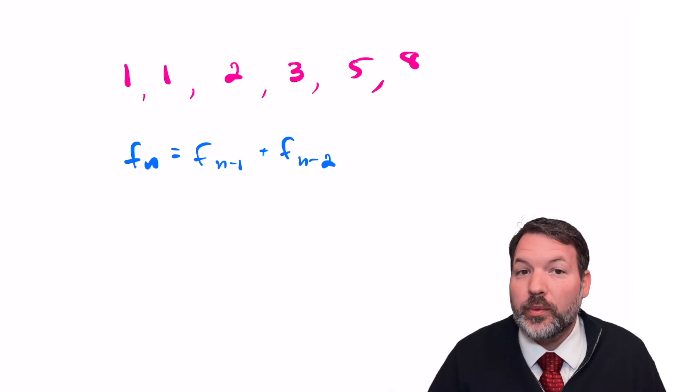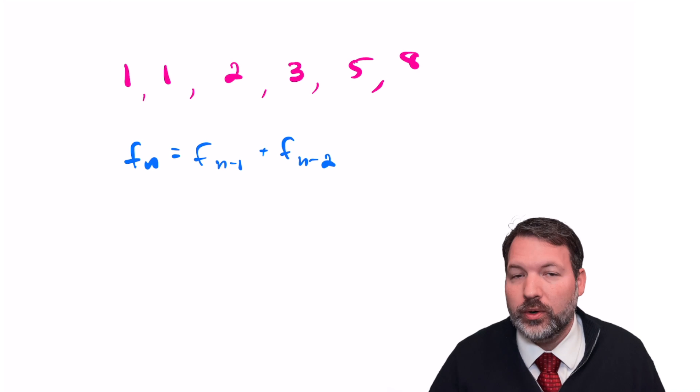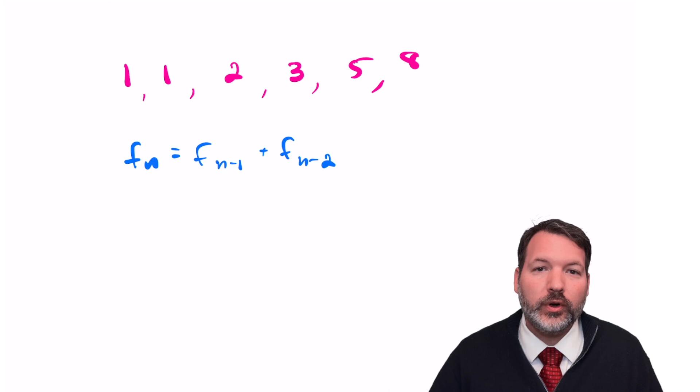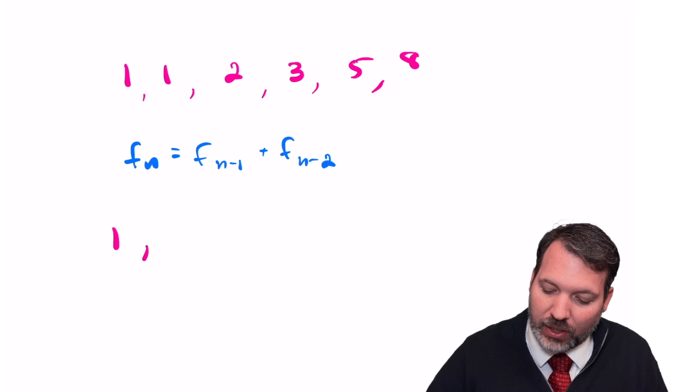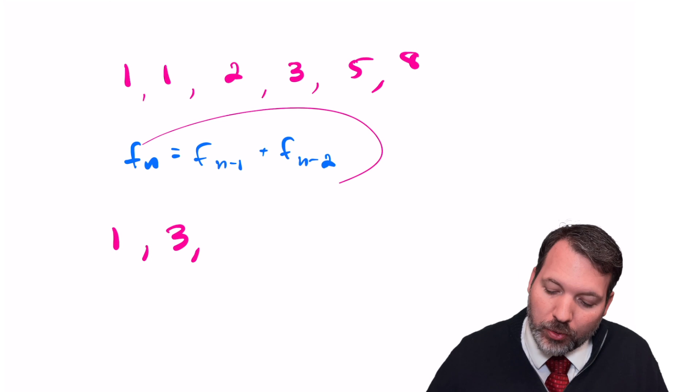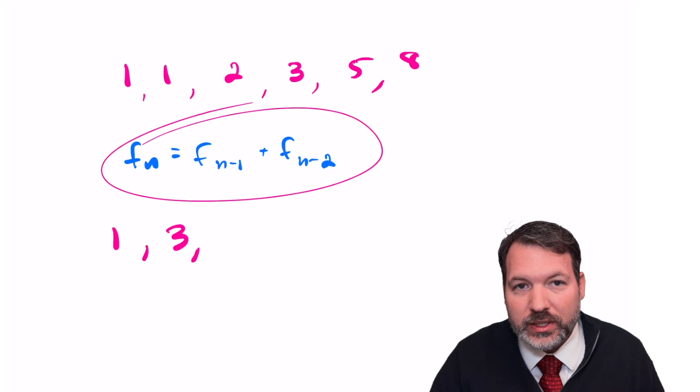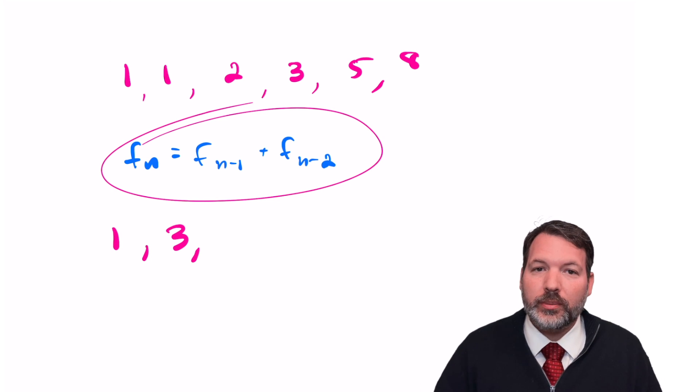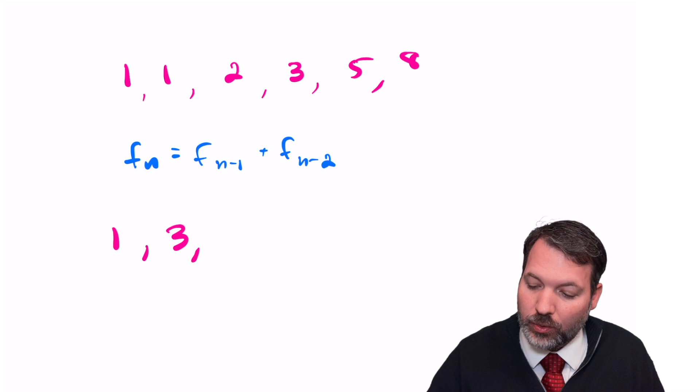There's no special reason that we have to begin with 1 and 1, or 0 and 1 for that matter. For example, there's another set called the Lucas numbers that actually begin with 1 and 3, but otherwise still obey this same characteristic, which says to generate a new term in the sequence, just add the previous two terms in the sequence.